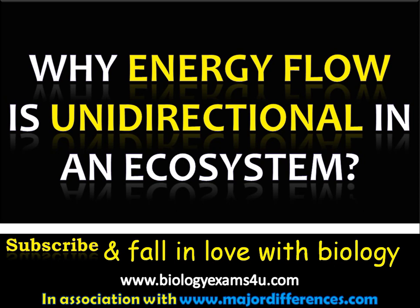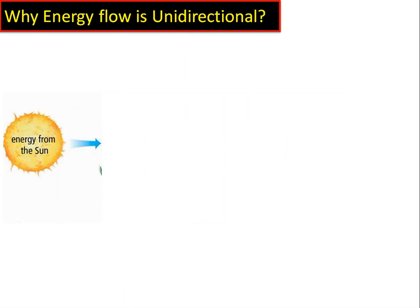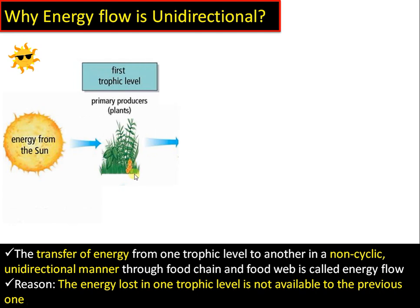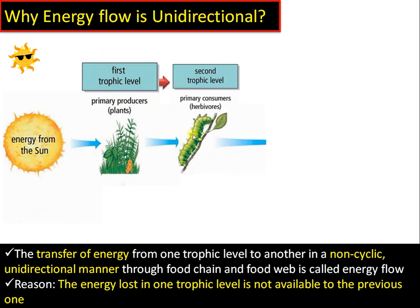In this video we are going to discuss a core concept in ecology: why energy flow is unidirectional in an ecosystem. Starting with the concept of energy flow, the ultimate energy source in an ecosystem is sunlight. From sunlight, energy is fixed by green plants through the process called photosynthesis, which constitutes the primary producers and represents the first trophic level.